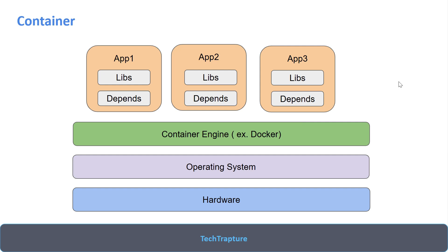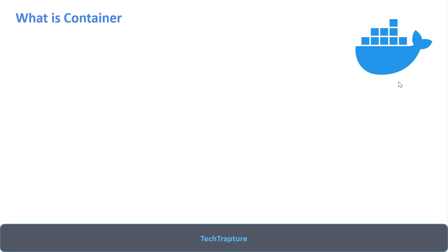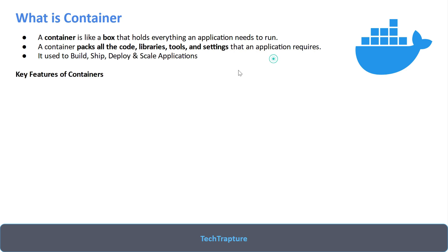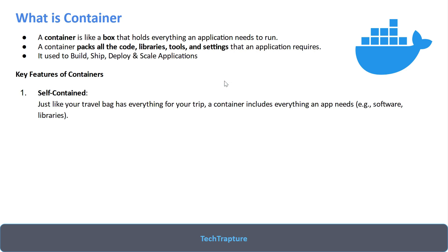Now let's understand containers more theoretically. A container is like a box that holds everything an application needs to run. If your application needs a specific Python version, Flask libraries, or any additional requirements, you club them all together into a container image — all the code, libraries, tools, and settings. Containers are used to build, ship, deploy, and scale your application.